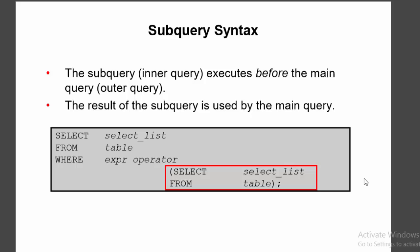A subquery is also called an inner query, which executes before the main query, which is the outer query. The result of the subquery is used by the main query. This is the simple syntax — this is our main query and this is our subquery. First the subquery runs, and then its result is used by the main query.